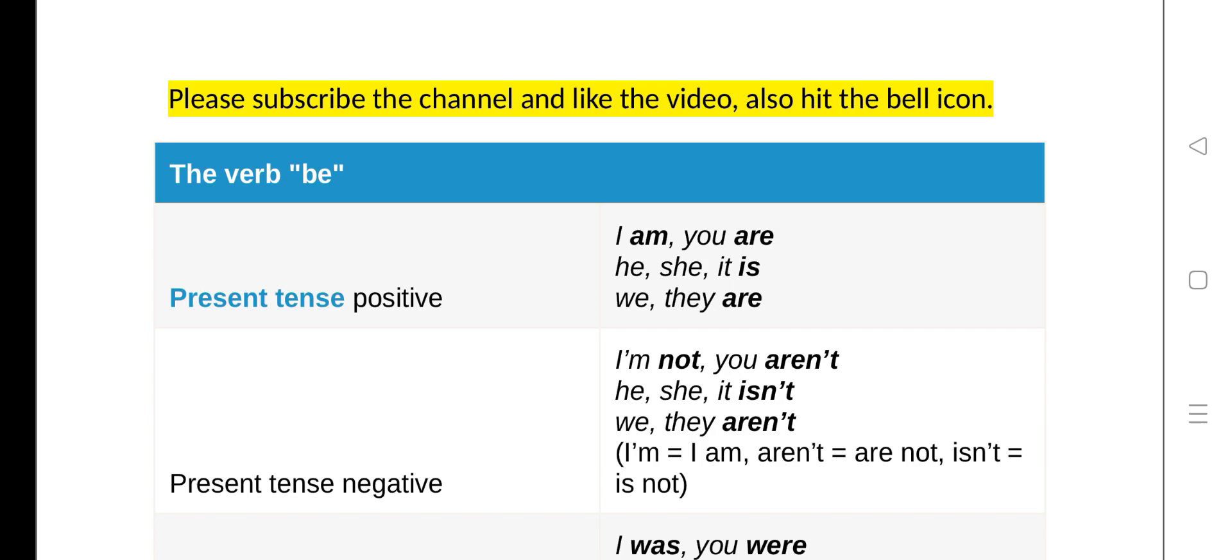So what is verb 'be'? Verb 'be' doesn't show action. It shows the state in which it is being. So let's start with present tense positive.